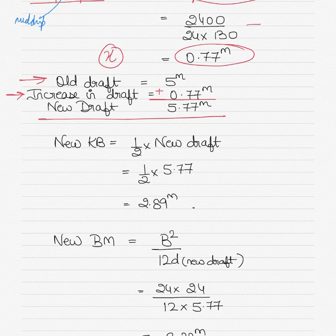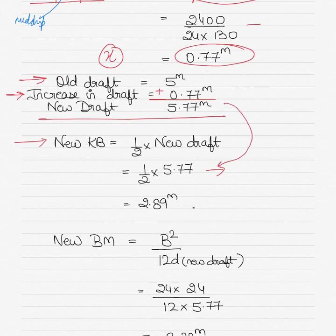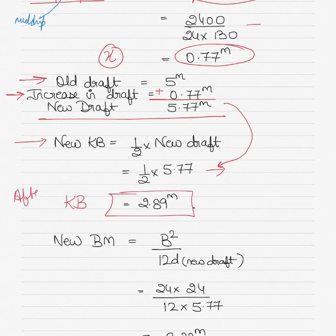Now, as we did before, we will use the new draft to calculate the KB of the vessel. KB of a box-shaped vessel is half of the draft, so in this case half of the new draft: half of 5.77 gives us 2.89 meters. This is the new KB after bilging.